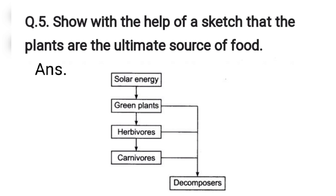In this way, plants are the ultimate source of food. Energy is transferred from one organism to another. When plants die, decomposers break them down, new plants come out, they get solar energy, then herbivores eat them, then carnivores — and this food chain remains complete.